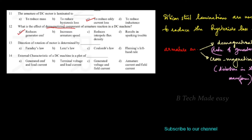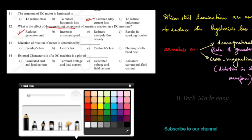The demagnetizing component reduces generator EMF, so Option A — reduces generator EMF — is correct. Next question: the direction of rotation of a motor is determined by which law? Options are: Faraday's law, Lenz's law, Coulomb's law, or Fleming's left hand rule.